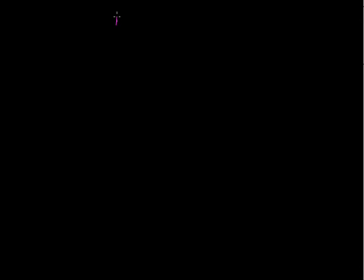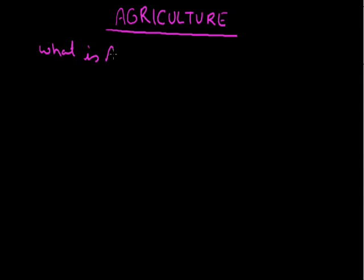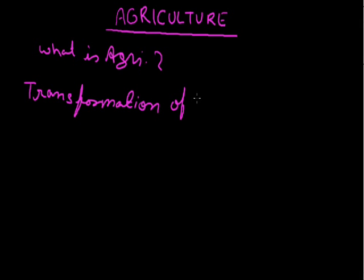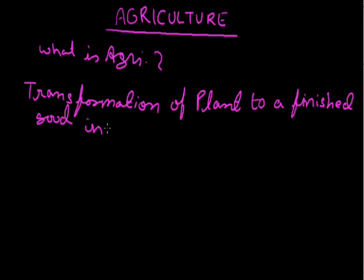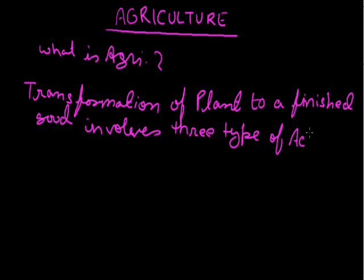Students, our today's topic is Agriculture. The question is: what is Agriculture? Agriculture is actually a transformation of plants to a finished good, and it involves three types of activity.